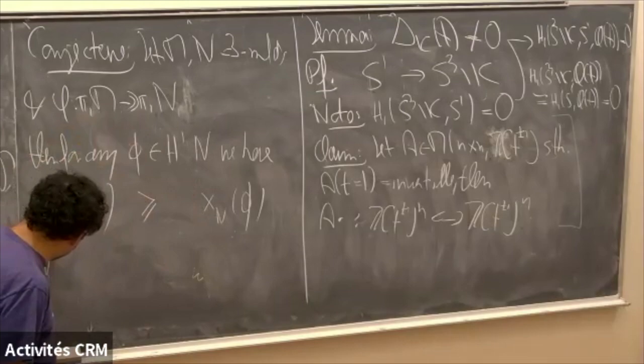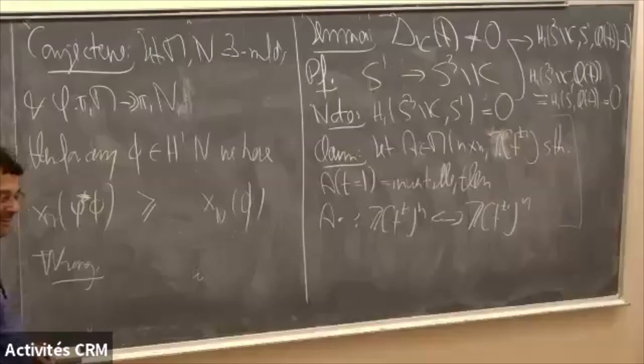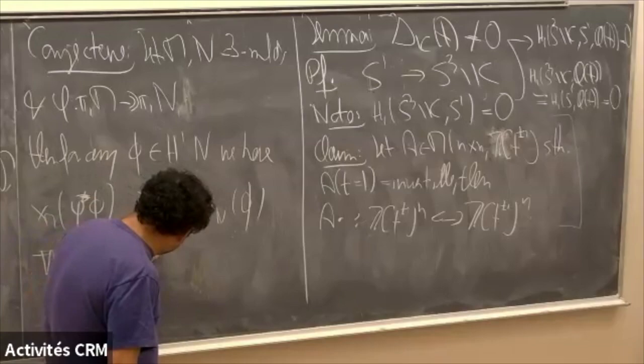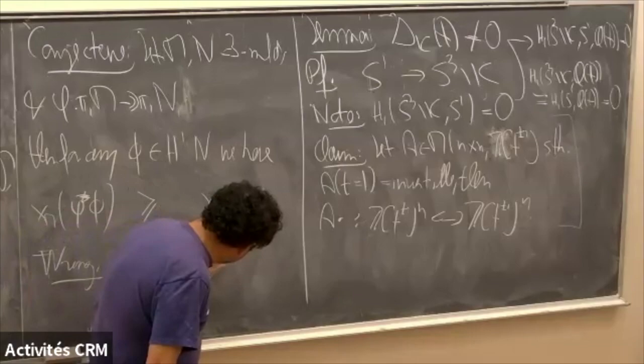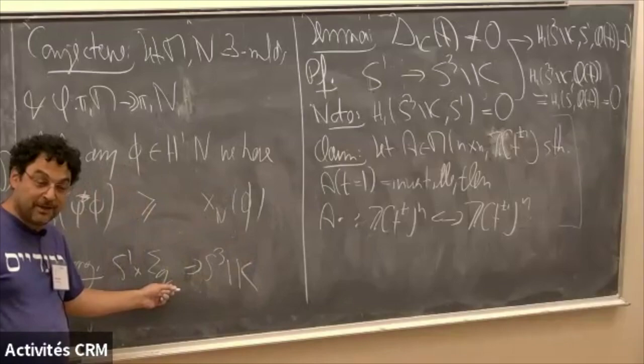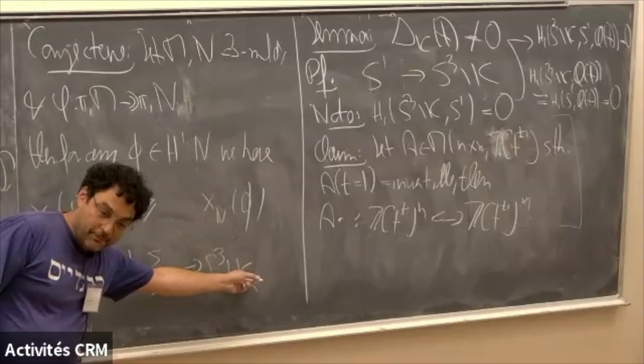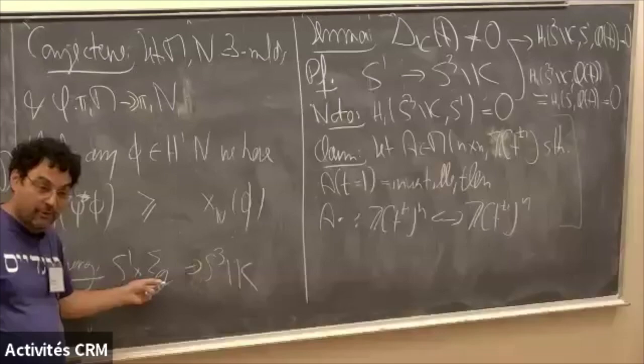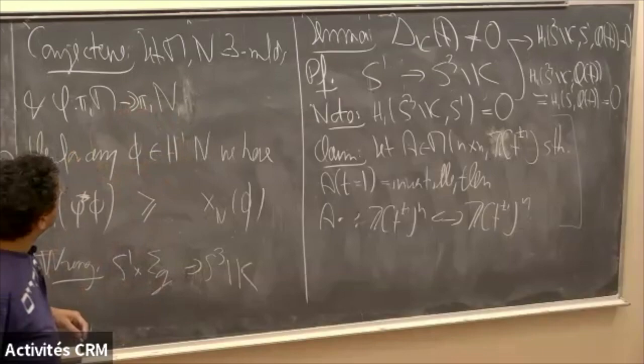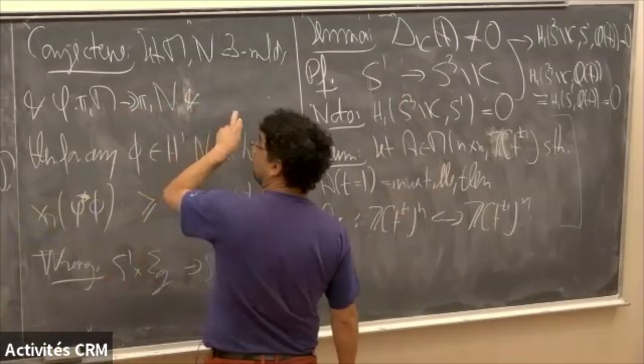As it stands this conjecture is wrong. A simple counterexample I learned from Yi-ni: take a surface, map from π₁(S¹ × surface) to π₁(surface) to a free group, and easily get an epimorphism onto a knot group. The Thurston norm on the right is non-trivial, but the pullback class on the left is represented by a torus with genus zero. So we need an additional condition: the induced map on H₁(M) to H₁(N) should be an isomorphism, which excludes the counterexample.